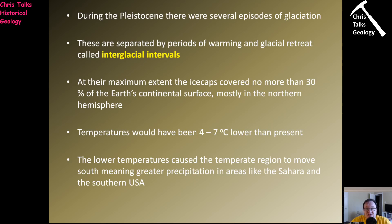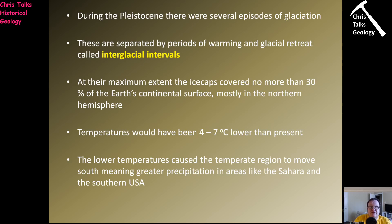During the Pleistocene, there were actually several episodes of glaciation — it's not one big build-out of the ice sheet. The ice sheet would move out, then retreat, build out, retreat, build out, retreat. These periods of retreat and warming are referred to as interglacials or interglacial intervals — periods when the climate warms up a little and the glacier retreats, before the climate gets cooler and the glacier starts to build out again. At their maximum extent, the ice caps covered no more than 30% of the Earth's continental surface, and they were focused almost exclusively in the Northern Hemisphere. In terms of temperatures, they would have been about 4 to 7 degrees Celsius lower than present.